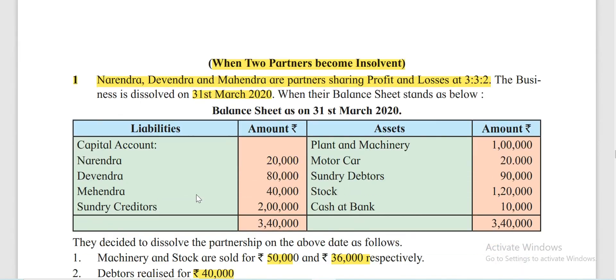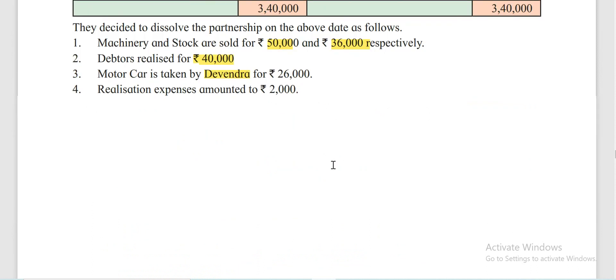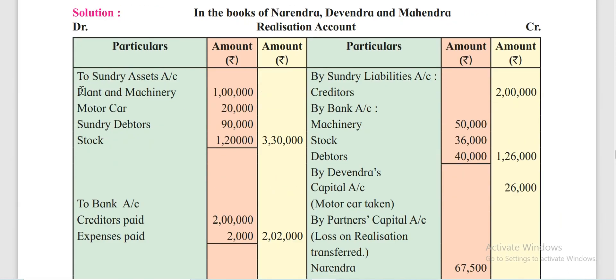Now see the problem. Firstly, assets and liabilities are transferred to the Realization Account. On the asset side: plant and machinery, motor car, sundry debtors, and stock — all are transferred to the Realization Account. The outer total is Rs 3,30,000. Similarly, liabilities are also transferred.